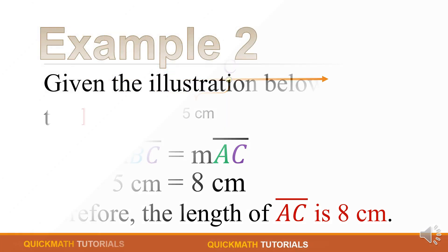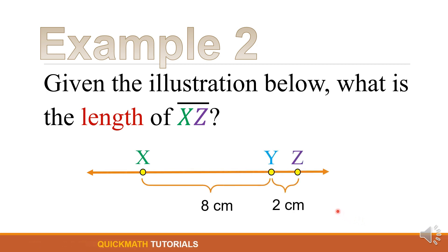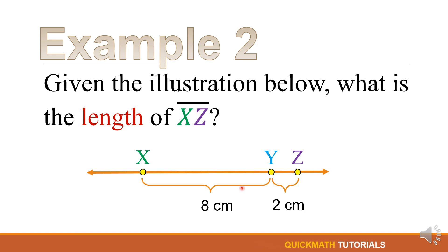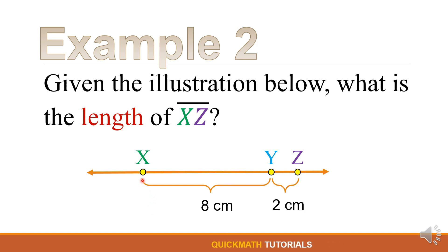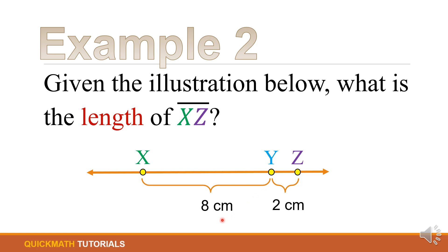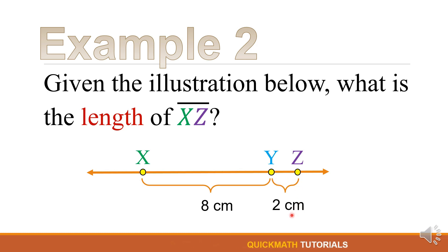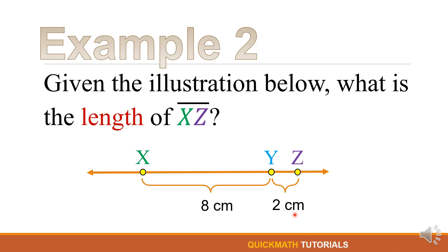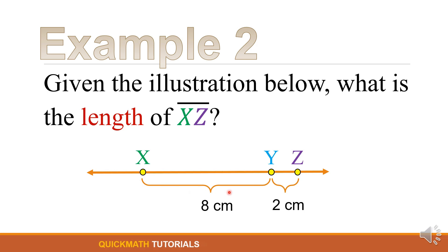For our second example, point Y is between point X and point Z. We are given the length of line segment XY which is equal to 8 cm, and the measure of line segment YZ is equal to 2 cm. We will find the length of line segment X up to Z.